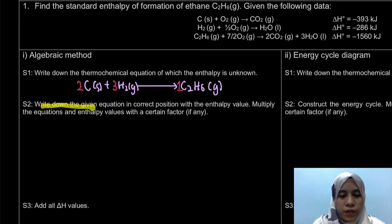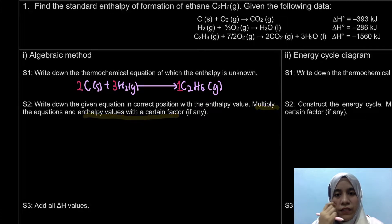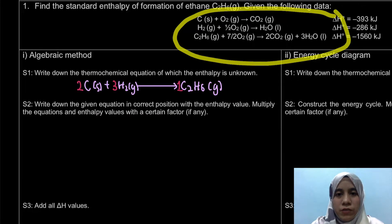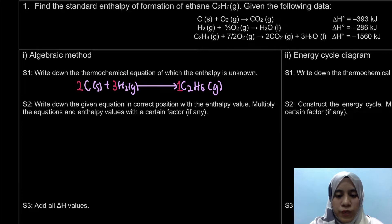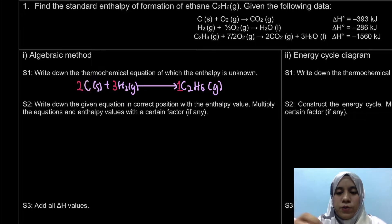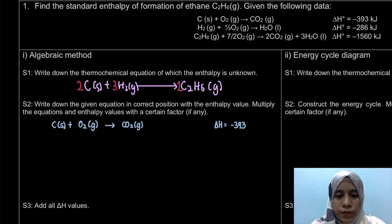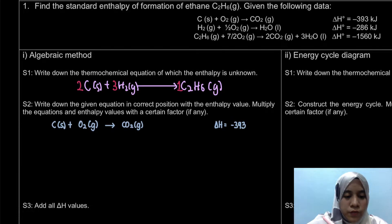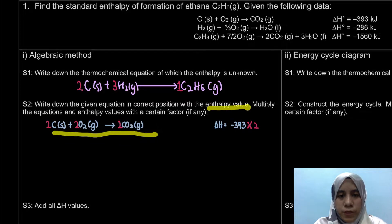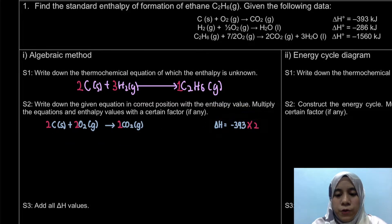The second step is to write down each given equation in the correct position with its enthalpy value, multiplying the equation and enthalpy values by a certain factor if needed. For carbon on the reactant side, we copy that equation but the stoichiometry is different — here it's 2 moles versus 1 in the given equation — so we multiply all values by 2. Write down the enthalpy values so you know whether they remain the same or need to change.